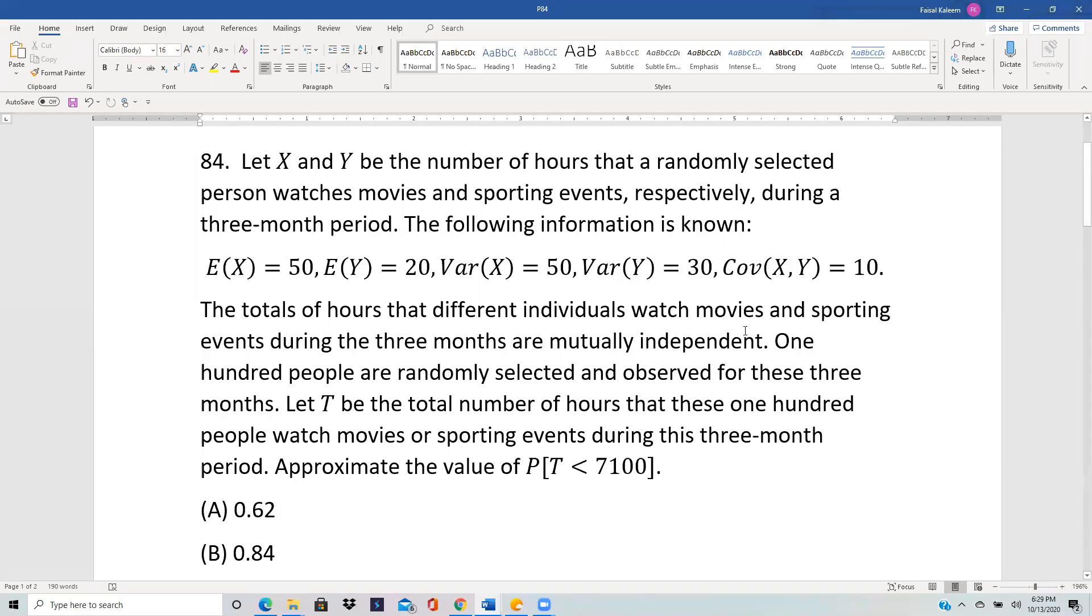Let X and Y be the number of hours that a randomly selected person watches movies and sporting events respectively during a three-month period. Expected value of X is 50, expected value of Y is 20, variance of X is 50, variance of Y is 30, and covariance of XY is 10.